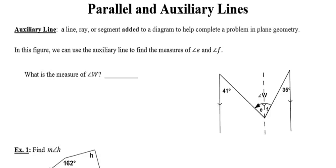In this video, we're going to continue our discussion of parallel lines and their angles, and we're going to add to that a little bit by talking also about auxiliary lines. An auxiliary line is any line or part of a line that's added to a diagram in order to help us figure out a problem.